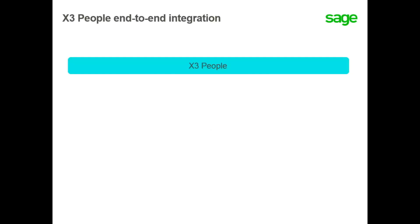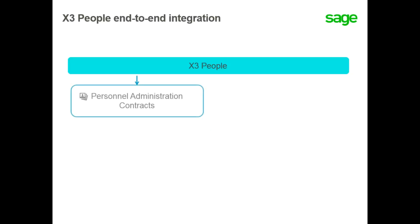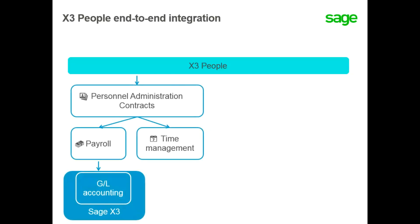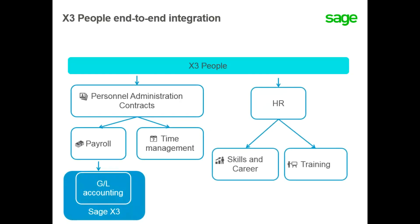X3 People has two core main modules. The first module manages the personnel administration and the calculation of salaries, while the second manages the career evolution of the employee. Other secondary modules take into account the expenses and salary growth. Payroll journals are integrated into the general ledger.